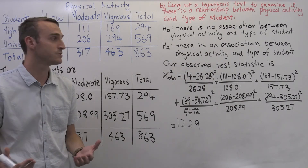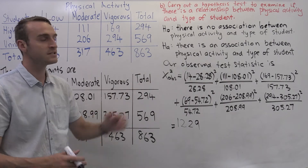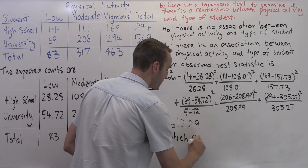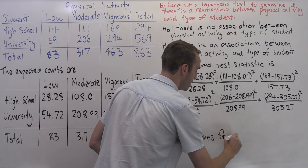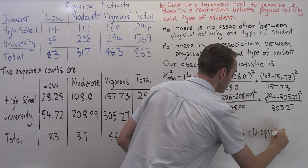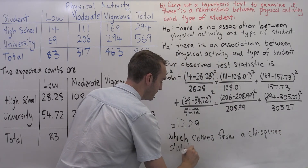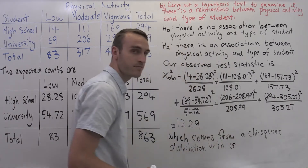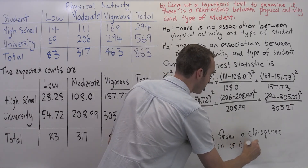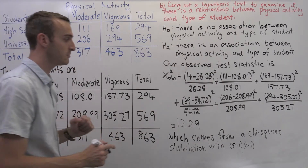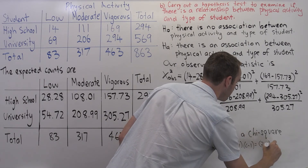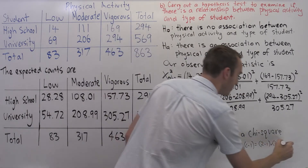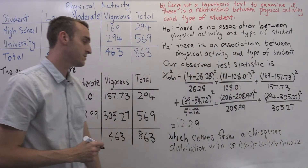Now that we have our test statistic, we need to determine the null distribution. Under H0, this observed x² value comes from a chi-squared distribution. The degrees of freedom are determined by the number of rows minus one times the number of columns minus one. Here we have two rows for high school and university, so two minus one, and three columns for low, moderate, and vigorous, so three minus one. That gives us one times two, which is two degrees of freedom.